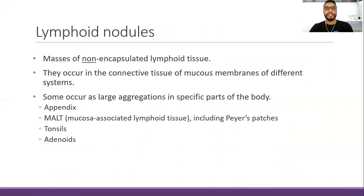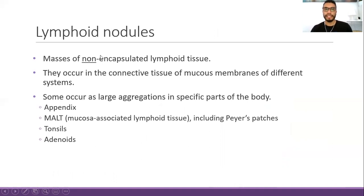The lymphoid nodules are the third type of secondary lymphoid organs. They are masses of non-encapsulated lymphoid tissue. They are non-encapsulated because both the spleen and the lymph nodes have an external capsule of dense connective tissue, but lymphoid nodules do not have a capsule.